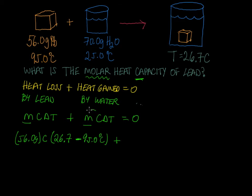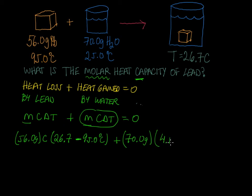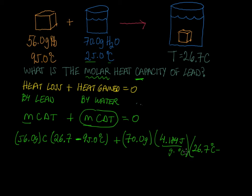Now for the water, the mass of the water is 70.0 grams. The heat capacity for water is 4.184 joules per gram per degree Celsius. The temperature change is always final minus initial, so the final temperature of the water is 26.7 degrees Celsius and the initial temperature is 25.0 degrees Celsius.